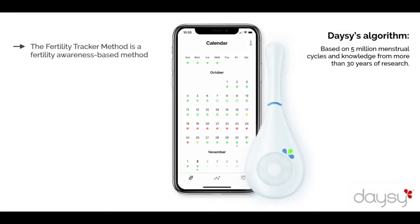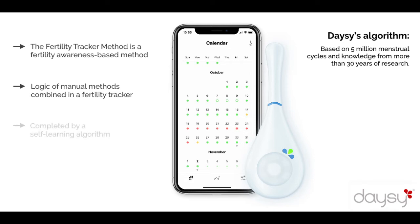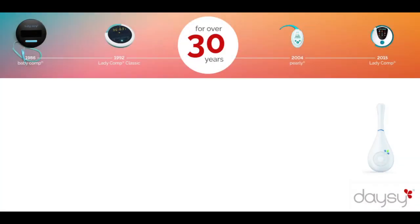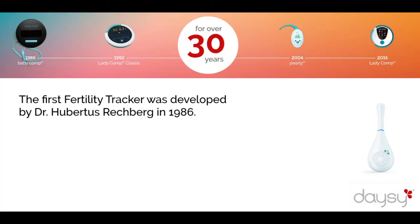The Fertility Tracker method is a fertility awareness-based method automated in an integrated device. It combines the logic of existing manual fertility awareness methods in the automated process of the Fertility Tracker using a self-learning algorithm. DAISY tracks and documents the user's basal body temperature, then makes an independent calculation of the fertile and infertile days using this data. The first Fertility Tracker was developed by Dr. Hubertus Rechberg in 1986.